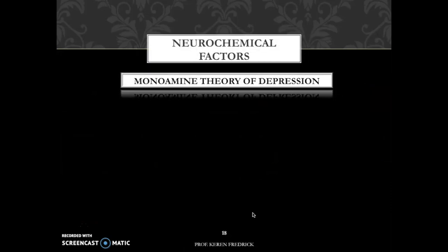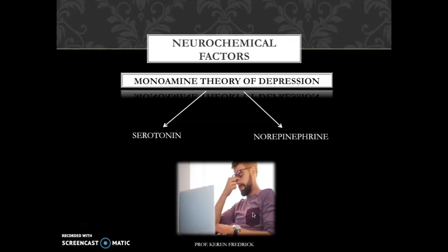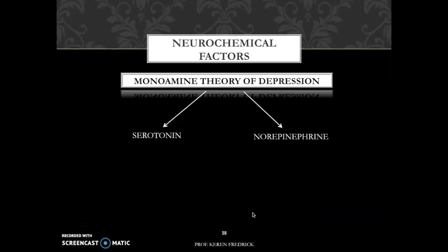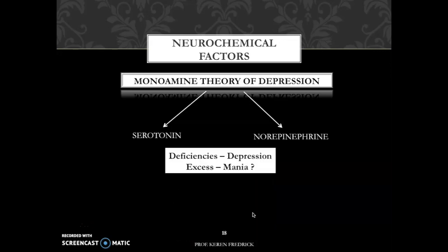Next we are going to discuss neurochemical factors. The monoamine theory of depression states that depression was due to an absolute or relative depletion of two neurotransmitters of the monoamine class: serotonin and norepinephrine. These are useful for important functions like behavioral activity, regulating stress, emotional expression, and vegetative functions like sleep, appetite, and arousal. This theory was extended to bipolar disorder: if deficiencies in these neurotransmitters could cause depression, can excesses lead to mania?